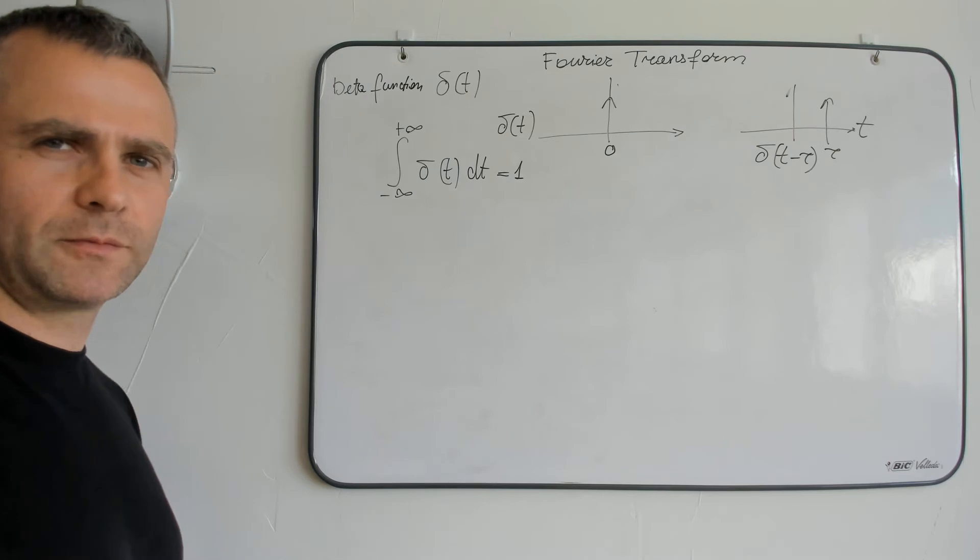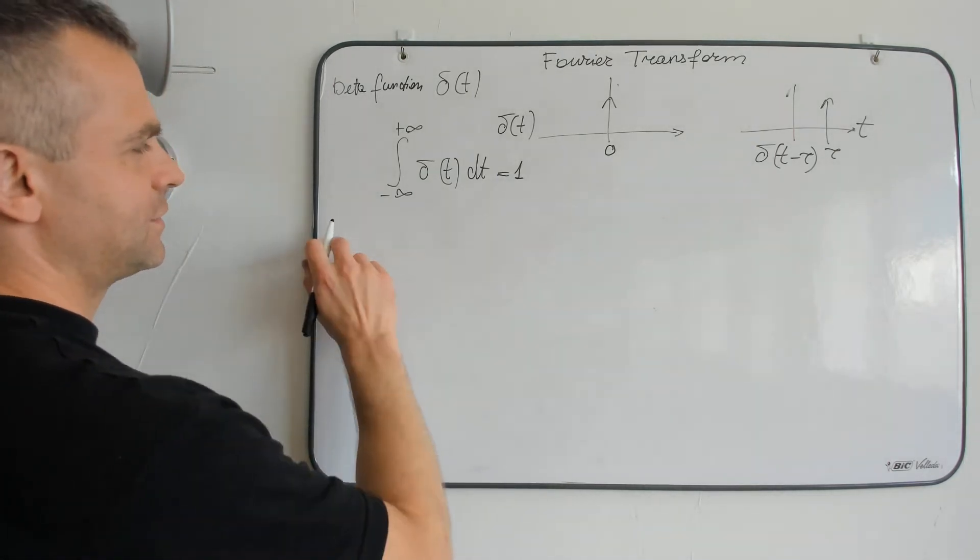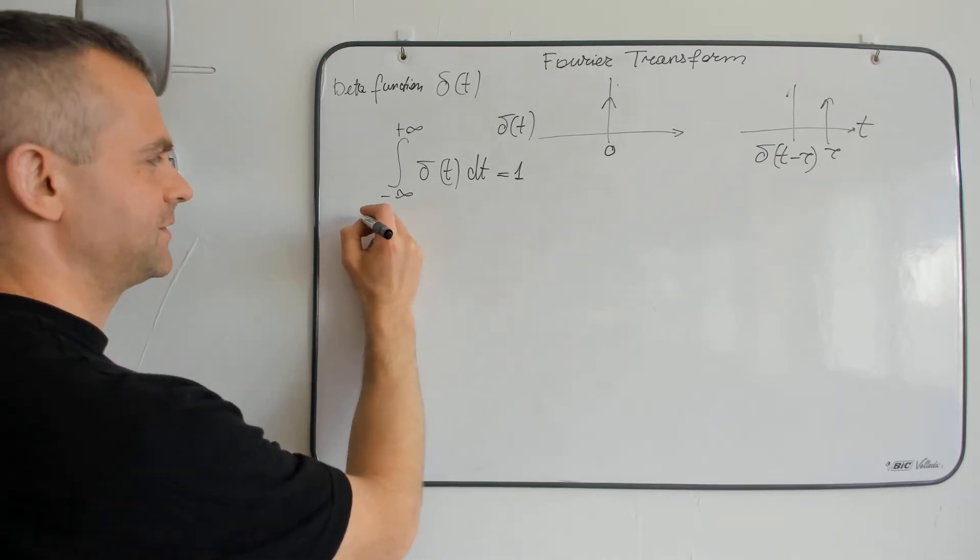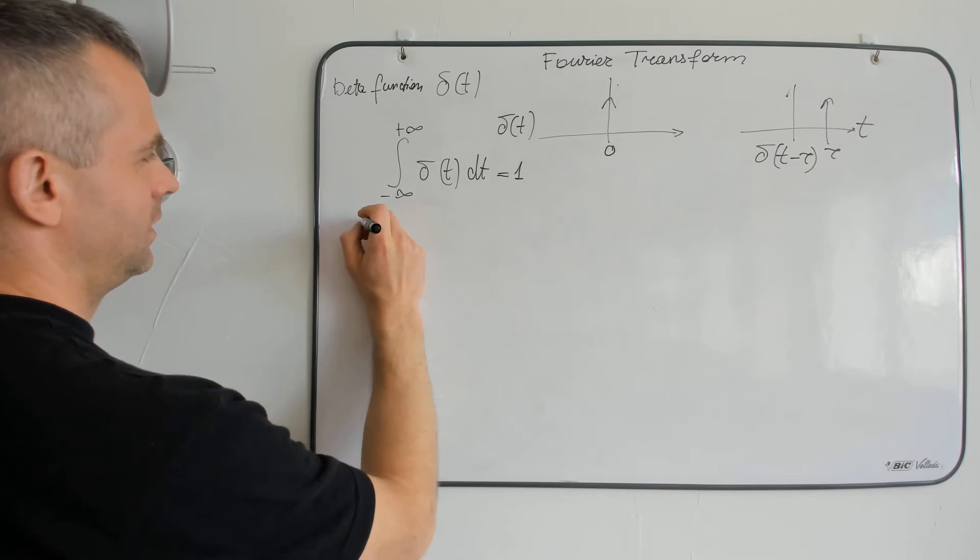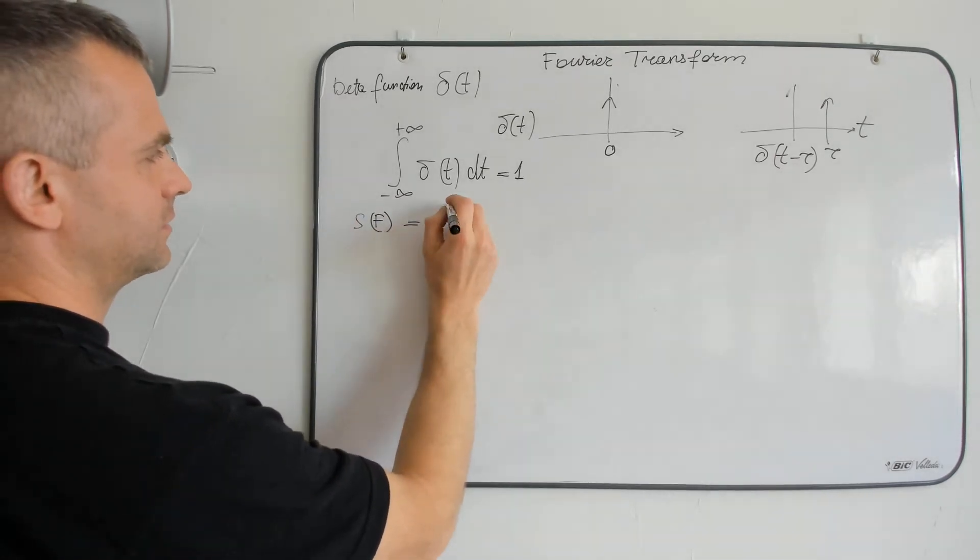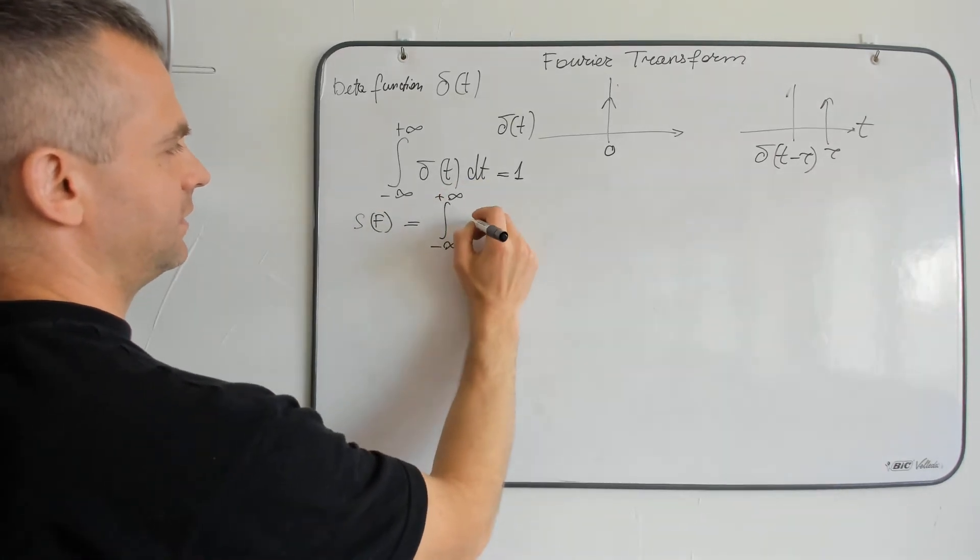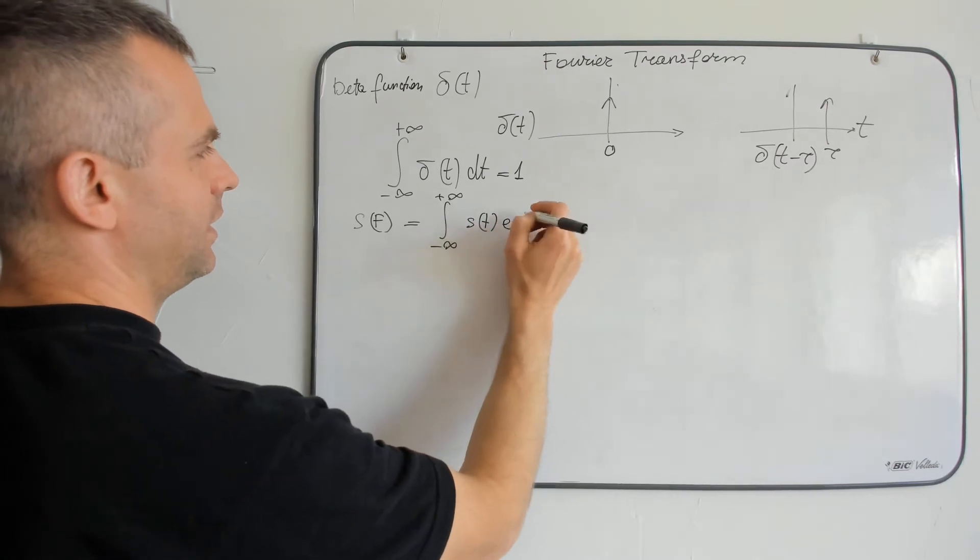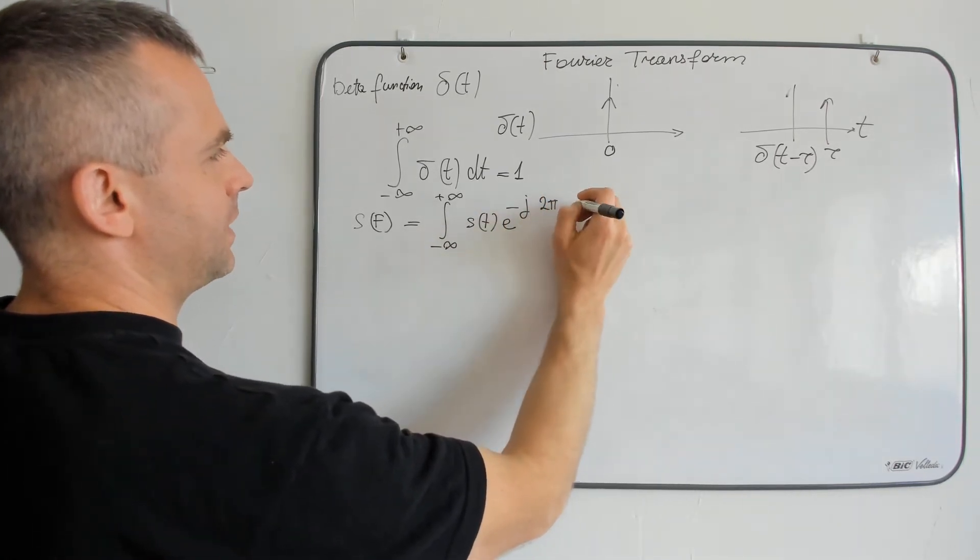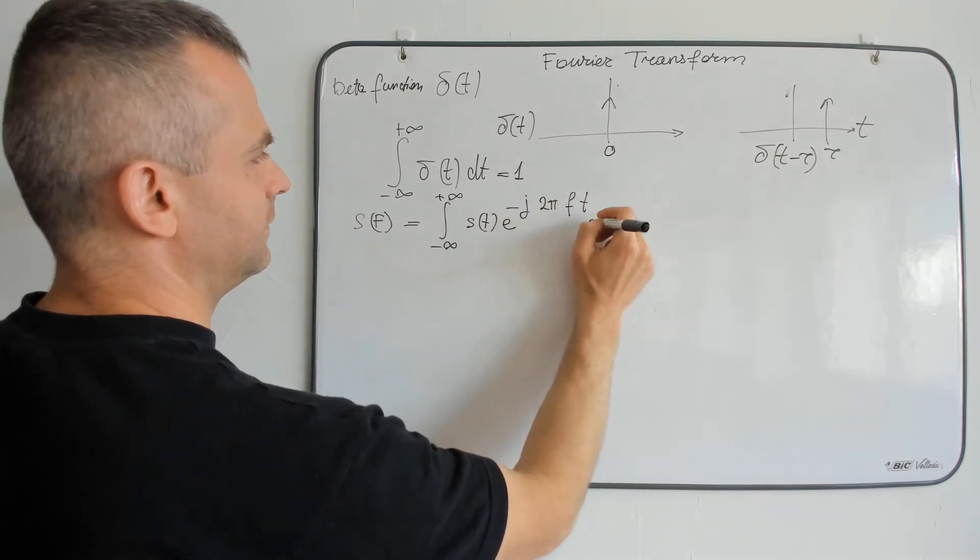How to get Fourier transform of delta function? Let's just remember what's the relation of Fourier transform. The relation of Fourier transform is this one: S of f is equal to an integral from minus infinite to plus infinite of S of t exponential minus j 2 pi f t dt.